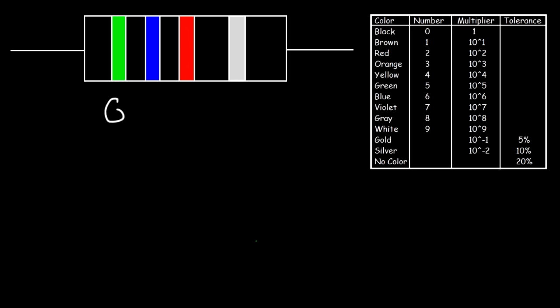Now it's your turn. Go ahead and calculate the value of this resistor. Determine the tolerance level and also the range in which the true resistance may lie. So the first color is green, the second is blue, the third is red, and the fourth, which is the tolerance, is silver.